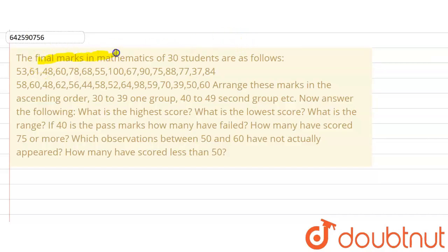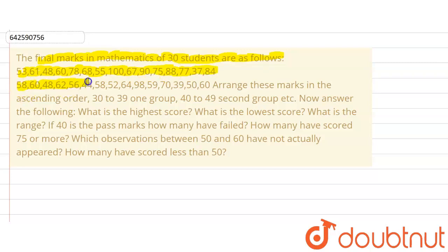Hello everyone. The question is: the final marks in mathematics of 30 students are as follows — 53, 61, 48, 60, 78, 68, 55, 100, 67, 90, 75, 88, 77, 37, 84, 58, 60, 48, 62, 56, 44, 58, 52, 64, 98, 59, 70, 39, 50, 60.